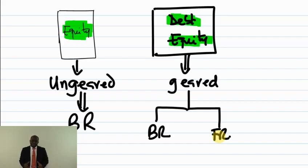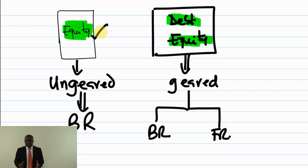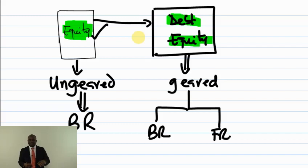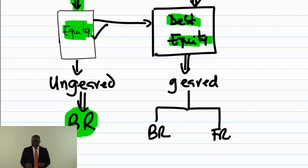The examiner will use scenarios to create questions. For example, your company is currently all equity and is now thinking of raising capital by way of debt — calculate the current and revised cost of equity and WACC. Many scenarios can be created: you can be all equity moving to raise debt capital, changing from ungeared to geared. You need to remember: when all equity you face only business risk, so your cost of capital reflects only business risk. Once you bring in debt, you also face financial risk.